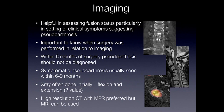Imaging is very helpful in assessing fusion status, particularly in the setting of clinical symptoms suggesting pseudoarthrosis — that's pain, instability, or neurological sequelae. Timing is very important: within six months of surgery, pseudoarthrosis should not be diagnosed. Symptomatic pseudoarthrosis usually is seen within six to nine months after surgery. X-rays with flexion and extension are often done initially, however their value is questionable as you may not actually see non-fusion on x-rays. High-resolution CT with multiplanar reformats is preferred, but MRI can be used as well.